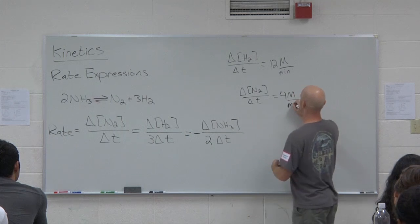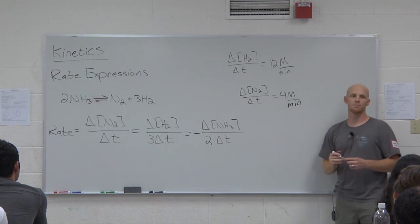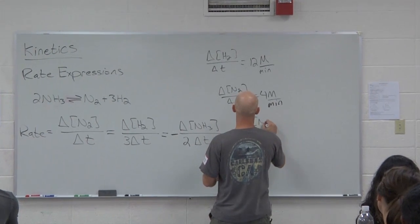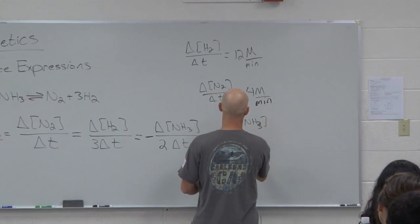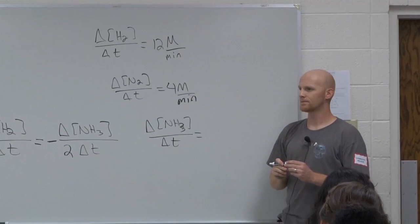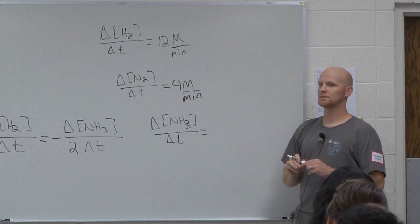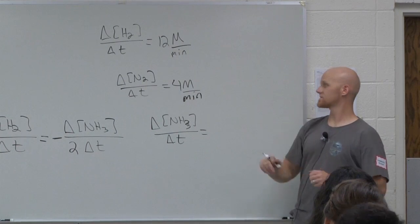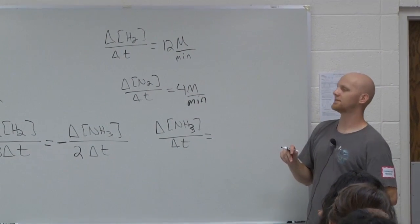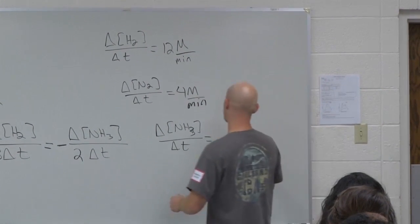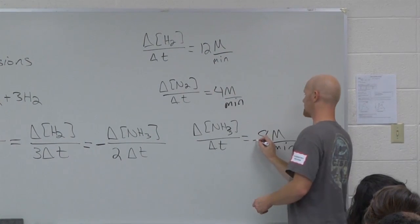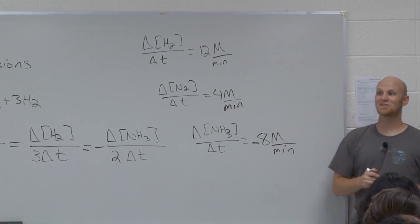Yeah, three times less, four molar per minute. Cool. And what if I asked for the rate of change of ammonia? What would his rate of change over time be? Which is? What is two-thirds of 12? Not quite 6. That's a half. Eight. But it's not just 8. It's awesome. It's negative 8.